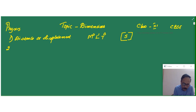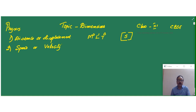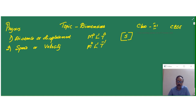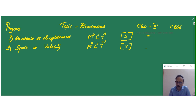Now after distance, it is speed or velocity. Velocity is nothing but distance by time, or length by time. So M0 L1 — and as the time term is in the denominator, we write T to the power of minus 1. For distance the unit is meter, and for velocity the SI unit is meter per second.